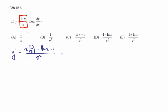Again, simplifying, x times 1 over x is simply 1 minus natural log of x over x squared, and that is option e.